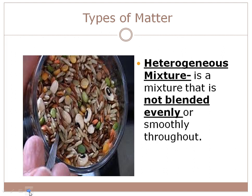A heterogeneous mixture is not evenly blended. It doesn't have to be liquids — it can be solids or gases. Looking at a solid heterogeneous mixture, I can see the different parts: a green pea, a black-eyed pea, a sunflower seed. If I can see all the different parts, it's heterogeneous. Examples include dirt and water, sand and water, and fruit salad.